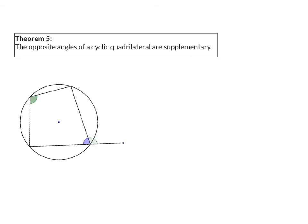Let's have a look at theorem 5. Theorem 5 says the opposite angles of a cyclic quadrilateral are supplementary. Looking at our sketch, we have a cyclic quadrilateral because all four of the angles are on the circumference of the circle, and this theorem says that the two opposite angles in that quadrilateral will be supplementary — they will add up to 180 degrees.